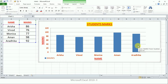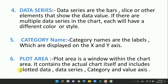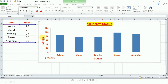Next is category name. Category names are the labels used for the X-axis and Y-axis, which are displayed on those axes. Then we have the plot area. The plot area is a window within the chart area — within the entire chart box, we have the actual chart, and that inner area is called the plot area. It contains the actual chart itself, including plotted data, data series, and the category and value axes.